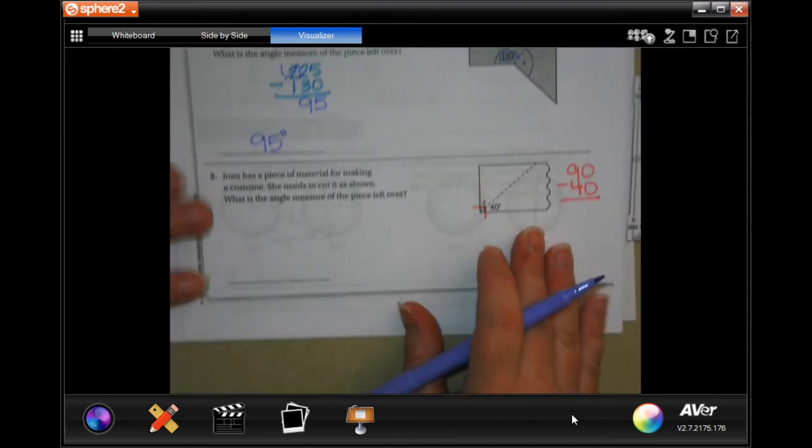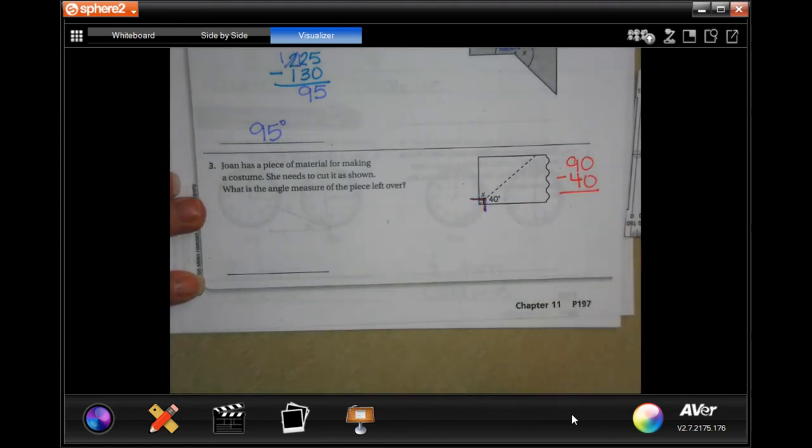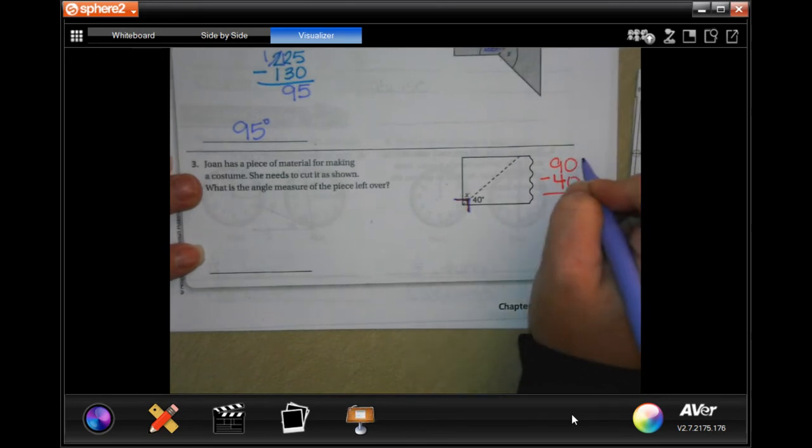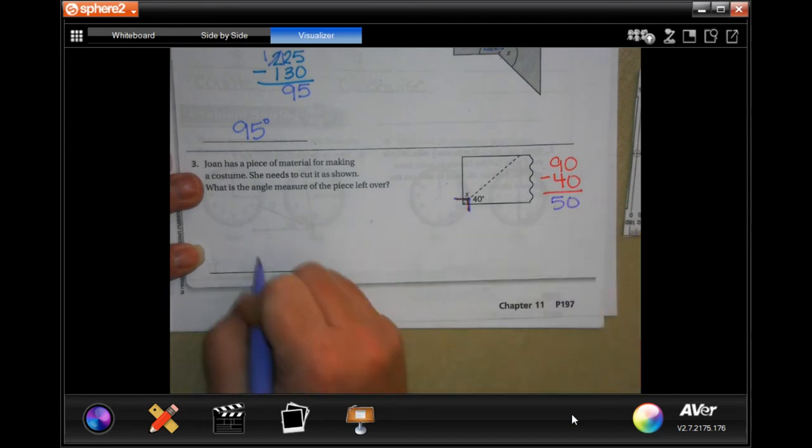Same thing here, guys. That's a right corner. Right there. It's got a little square right there, which means that's a right corner, which means it is automatically 90 degrees. 90 minus the 40 this year is 50. 50 degrees. Done.